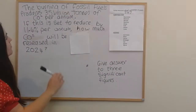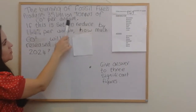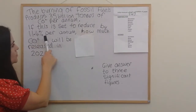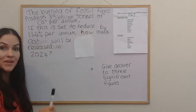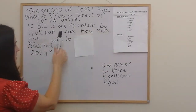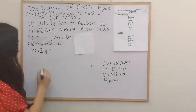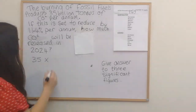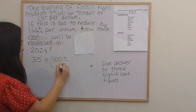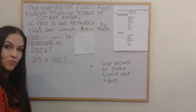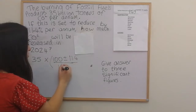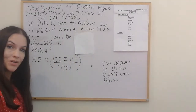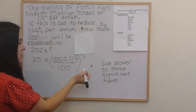Our first example: the burning of fossil fuels produces 35 billion tons of CO2 per annum (that's per year). If this is set to reduce by 11.4% per annum, how much CO2 will be released in 2024? We write the initial amount down first — which is 35 — then multiply it by 100 plus or minus the percent (11.4) over 100. The power is the number of years: from 2021 to 2024 is three years, so the power is 3.